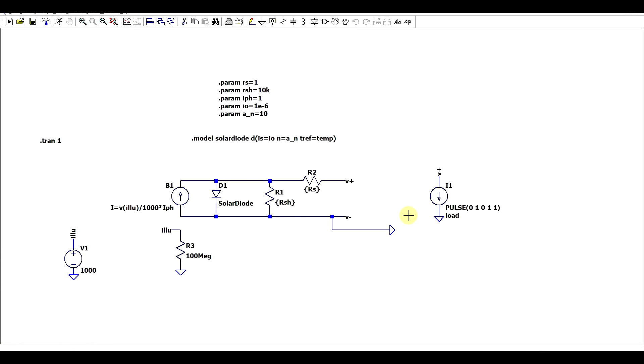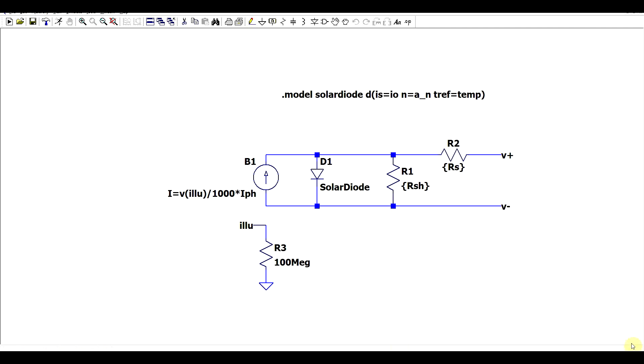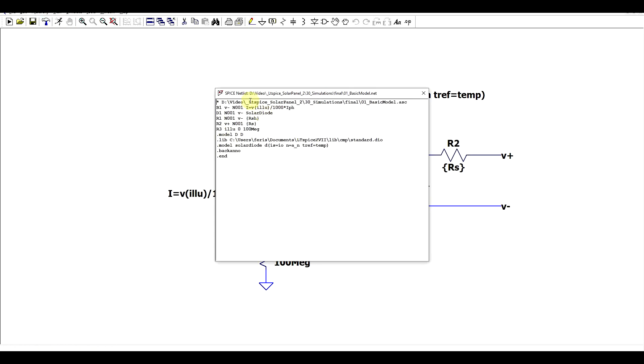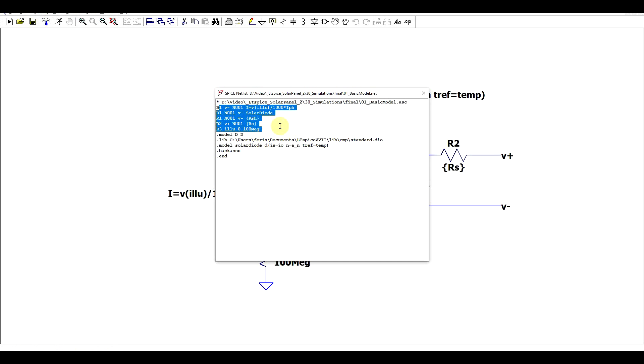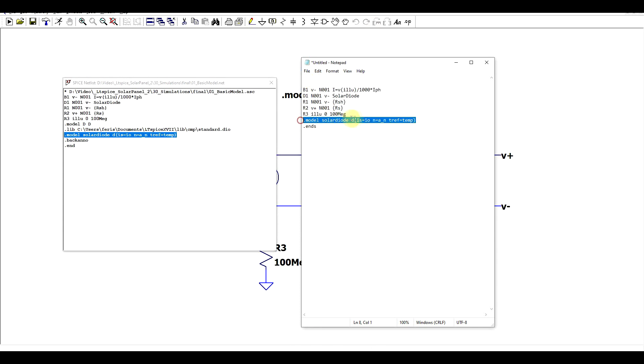Now once you're happy with the model, the various parameter definitions, the various net definitions, next step is to take it from the simulator and put it into a library file. For that I reverted back to the initial schematic where I didn't have all of the extra sources and if we go to view spice netlist here we will see most of the information that we need. We have a netlist with all of the components and the various interconnections. We will need to take these, put them into a text editor so notepad will do.